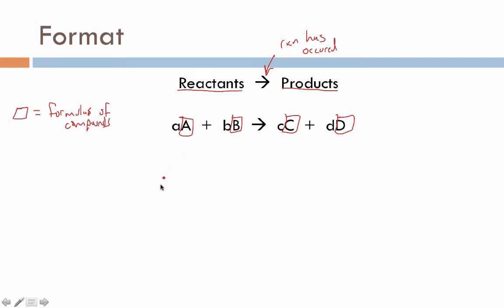These lowercase letters are known as the coefficients. Via the balancing process, ensuring that atoms are conserved before and after the reaction, we often have to add in these coefficients to show that not just one of chemical A reacted, but maybe two or three or four of chemical A reacted, so that the number of atoms in chemical A matches the number of atoms that show up in the product as well.